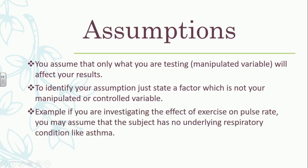Here's an example: you're investigating the effect of exercise on pulse rate. You're going to check the subject's pulse rate before and after exercise. You would assume that the subject has no underlying respiratory conditions, like asthma. You make that assumption because you don't know for sure — they could look healthy but actually be ill. You're not manipulating the person in that regard, and it's not something you can control. So your assumption is that this person has no respiratory conditions such as asthma.